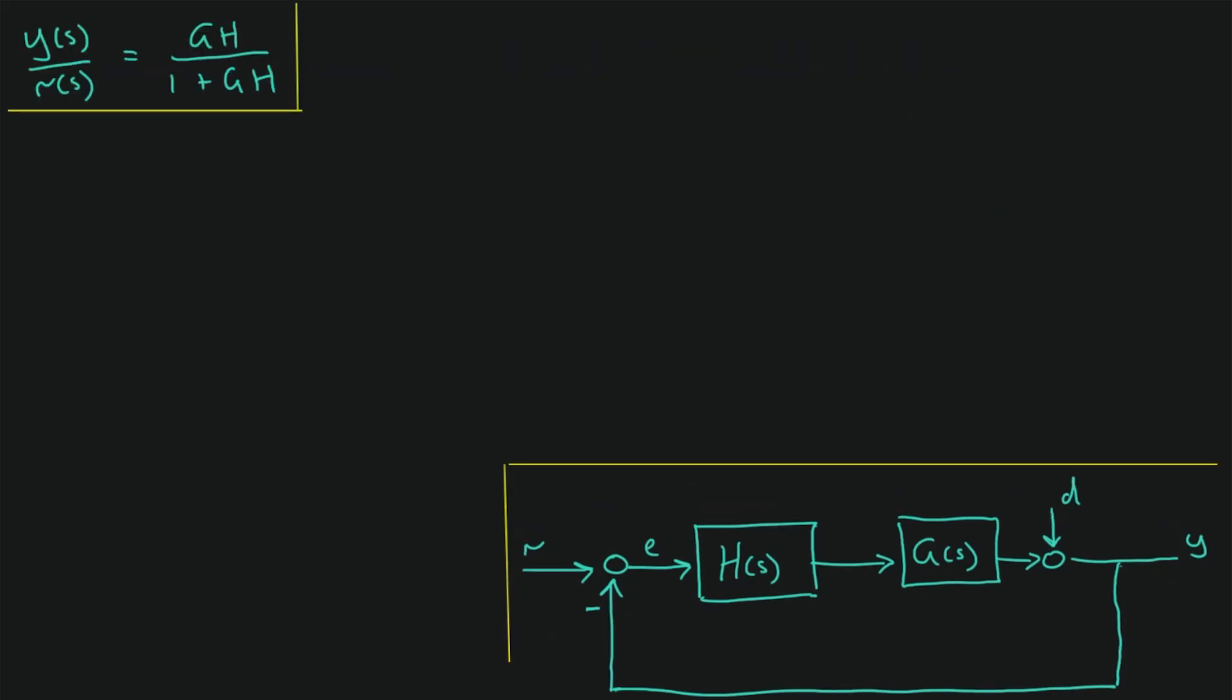So if we start with the transfer function from R to Y, the first thing we do when we tackle these sorts of problems and we're looking for the transfer function from only one input to an output is we assume that the other inputs are going to be zero. So for now, we will assume that D is equal to zero.